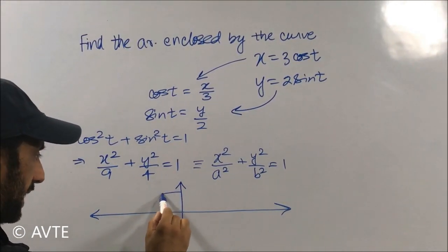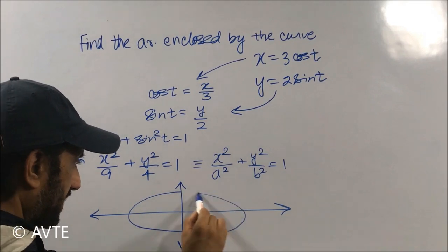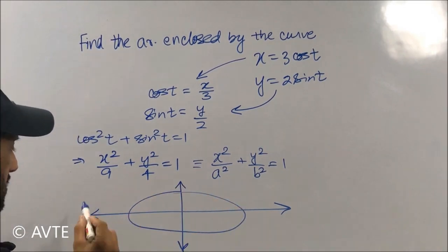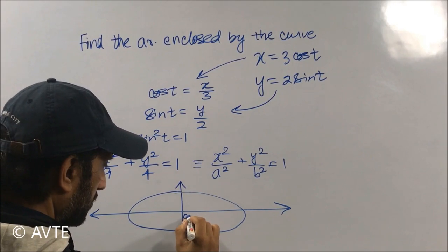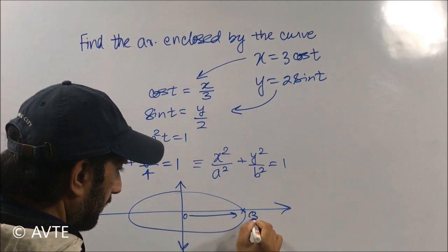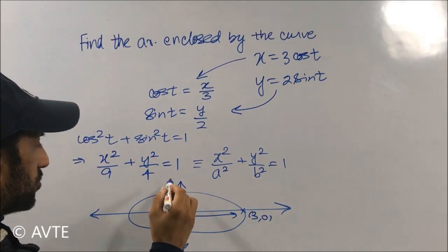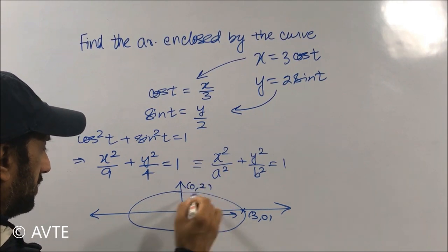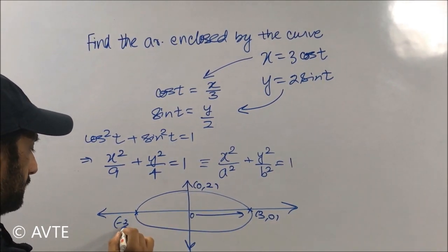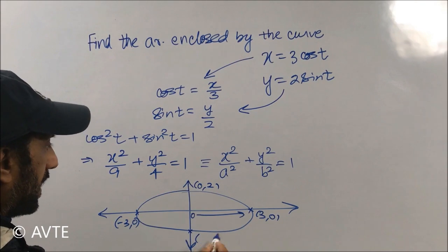This will be 3, so this is 0 to 3, 3 comma 0, and this will be 0 to 2, this will be 0 comma 2, same way 0 comma minus 2.